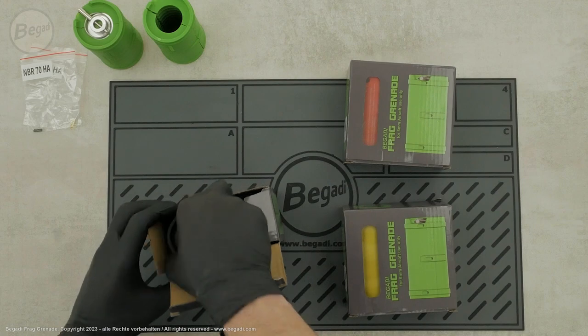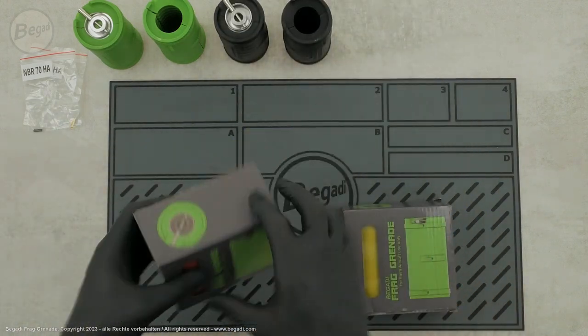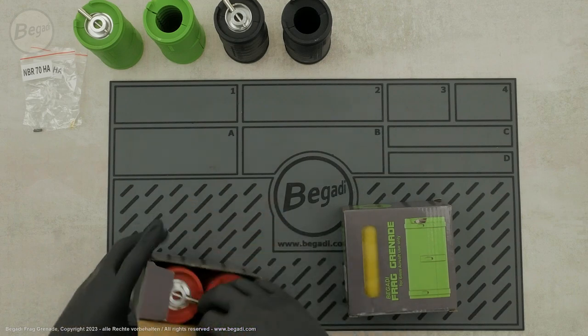The Bugatti Frag Grenade is available in four different colors: green, black, red, and yellow. Each variant comes with two shells.